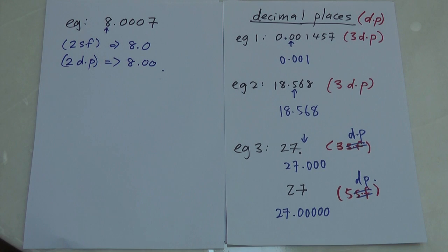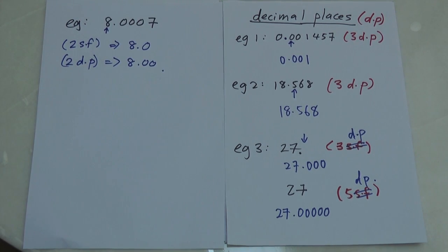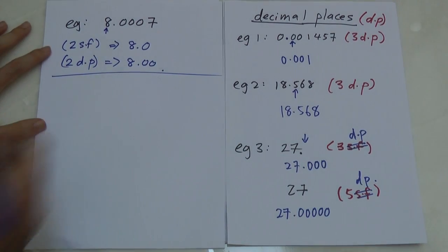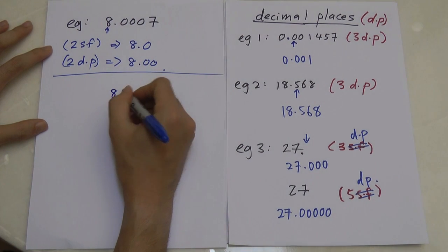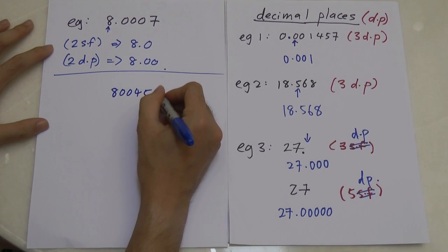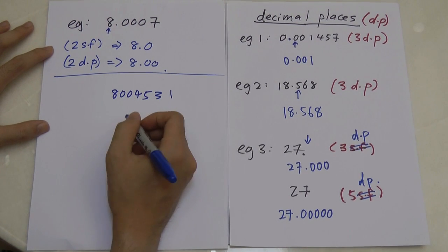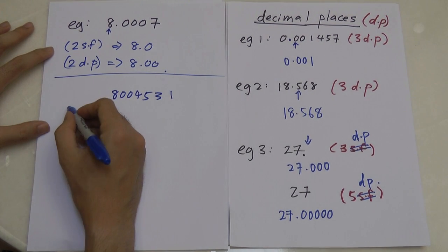I hope you understand the difference between significant figures and decimal place. Decimal place rules are always the same — straightforward. Significant figures can be a little bit different. Let's look at one more example: 8,004,531 rounded to four significant figures.